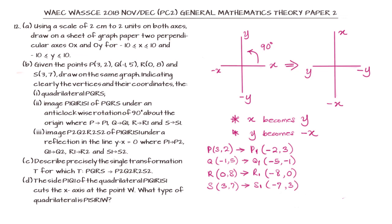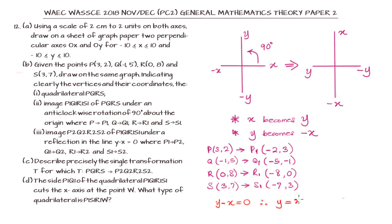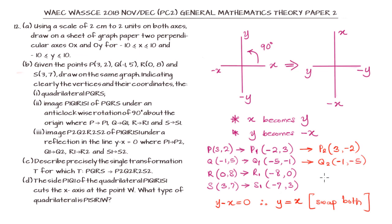For the second part, we find P2, Q2, R2, S2 under the reflection of the line y minus x equals 0. This means y equals x, and reflecting in y = x simply means swapping the x and y coordinates. So P1(-2, 3) gives P2(3, -2); Q1(-5, -1) gives Q2(-1, -5); R1(-8, 0) gives R2(0, -8); and S1(-7, 3) gives S2(3, -7).